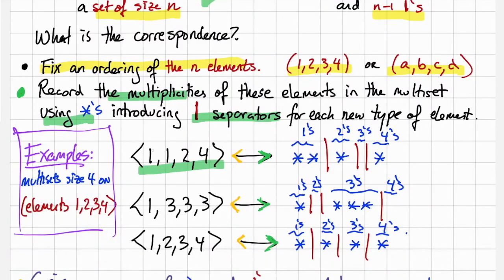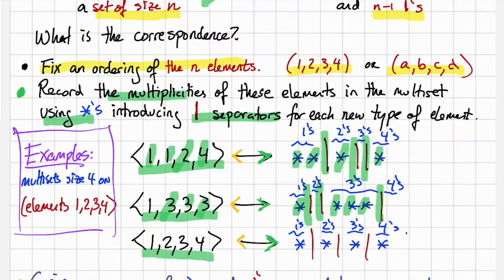Here's some examples. If we see 1, 1, 2, 4, we put a star for a 1, a star for a 1, and that's the end of the 1s so we put a separator. And now we put a star for the 2s, and then we put a separator. There's no 3s, so we put another separator. And last there's a 4, so we put one more star. Consider 1, 3, 3, 3. We have a star for the 1, and then we mark the end of the 1s with a separator. There's no 2s, so we put another separator. We have 3 stars for the 3 3s in our multiset, and then we have a separator to end the 3s. All in all, we always have 4 stars and 3 bars, separating elements of type 1, 2, 3, and 4.